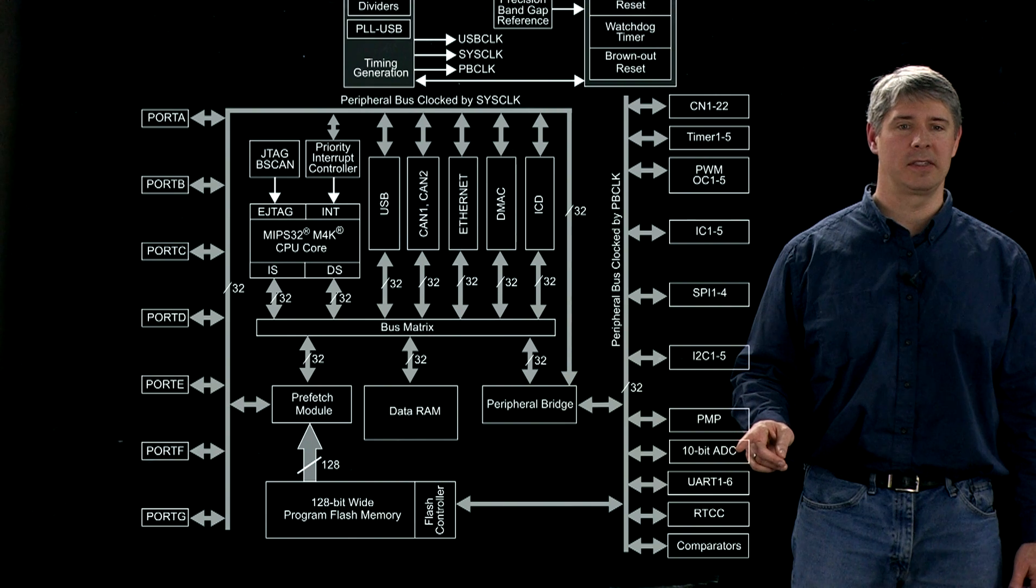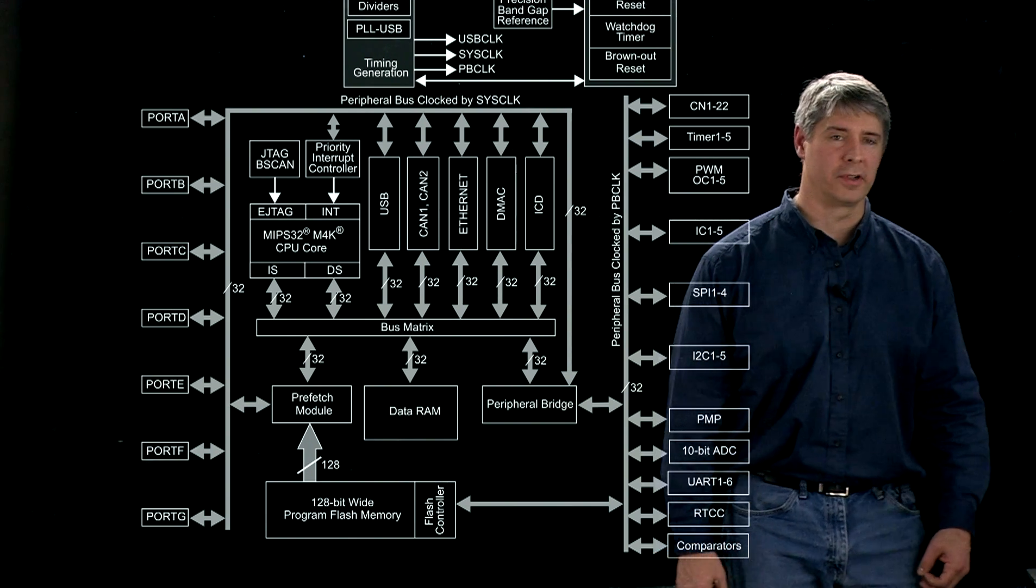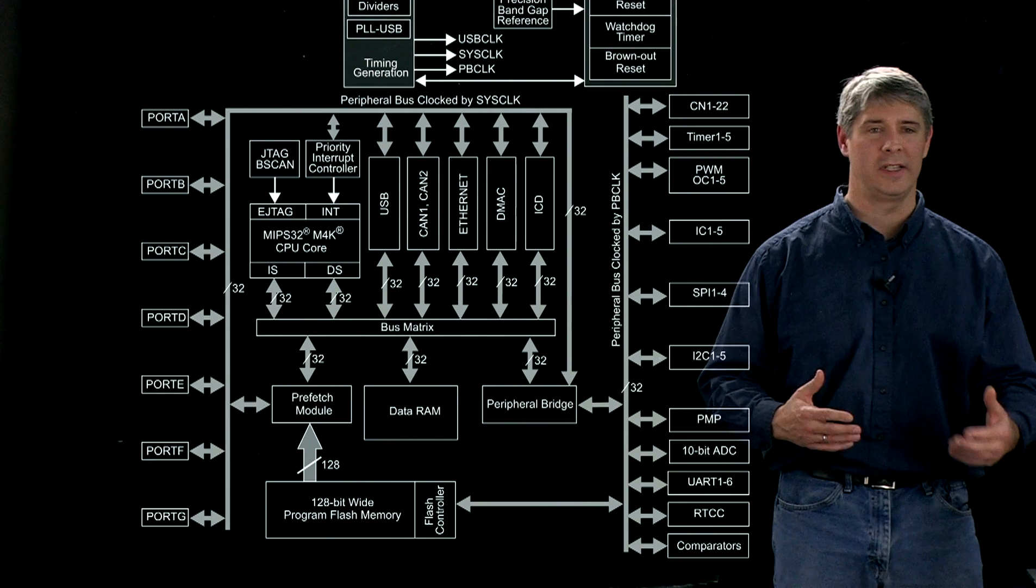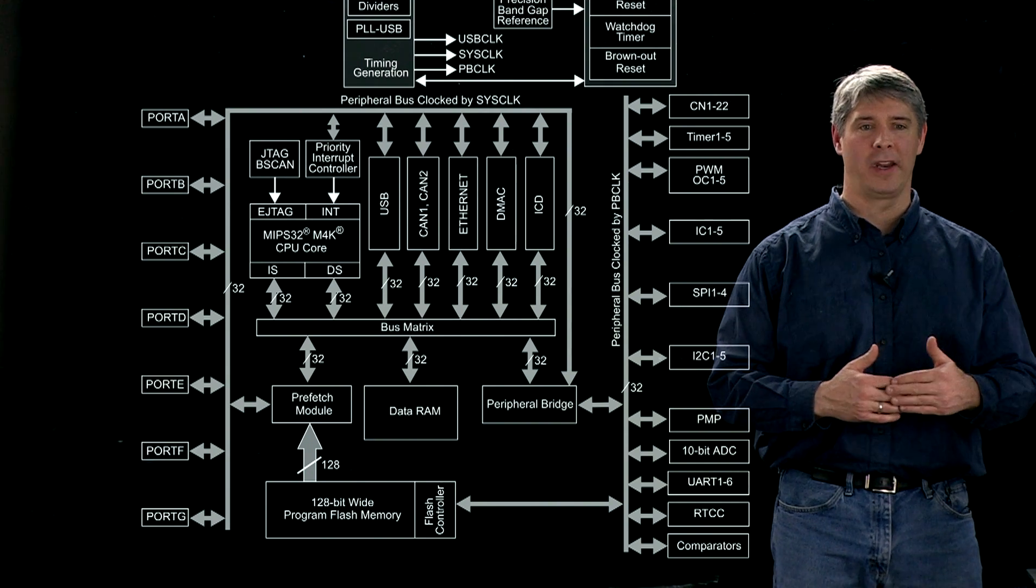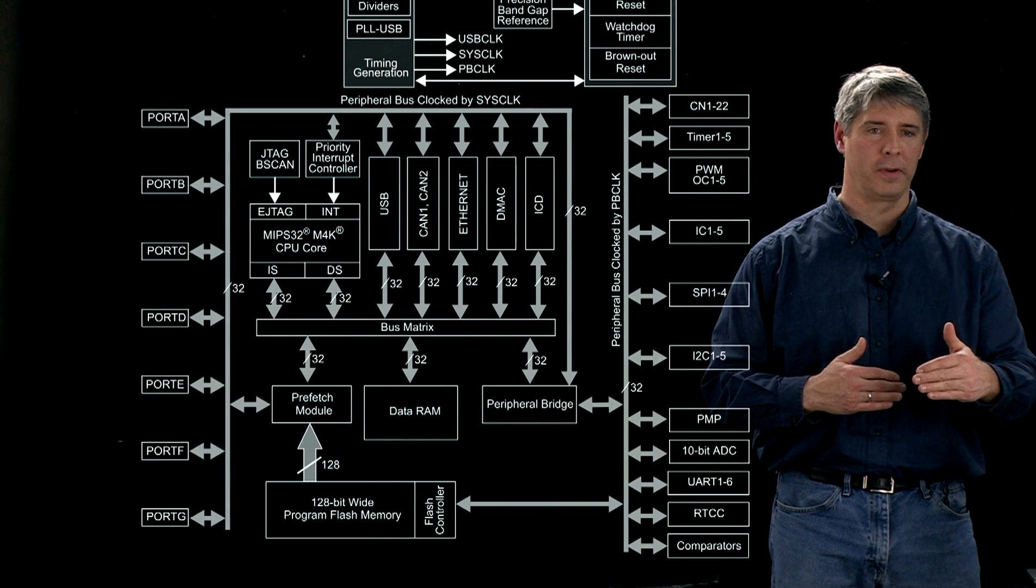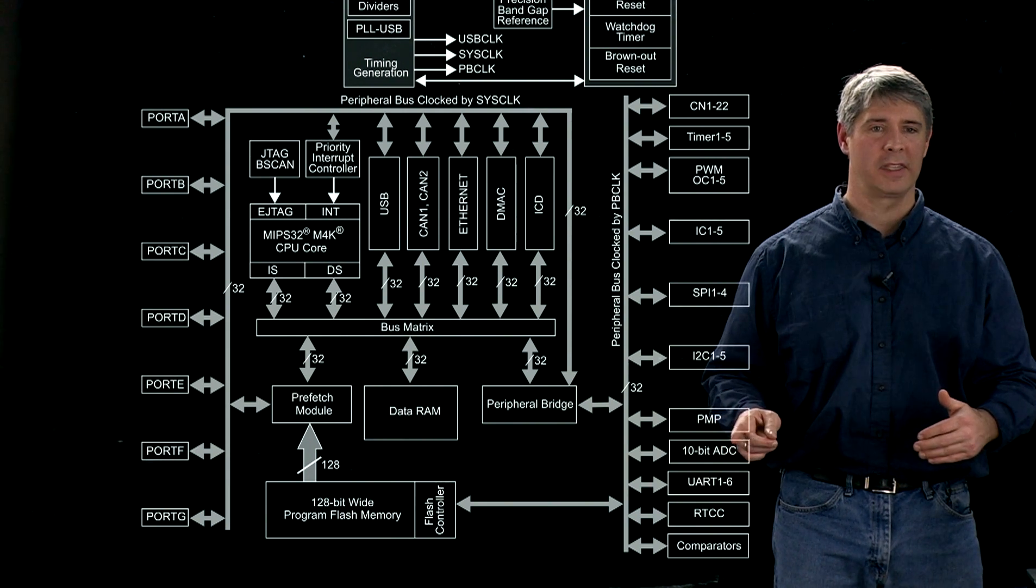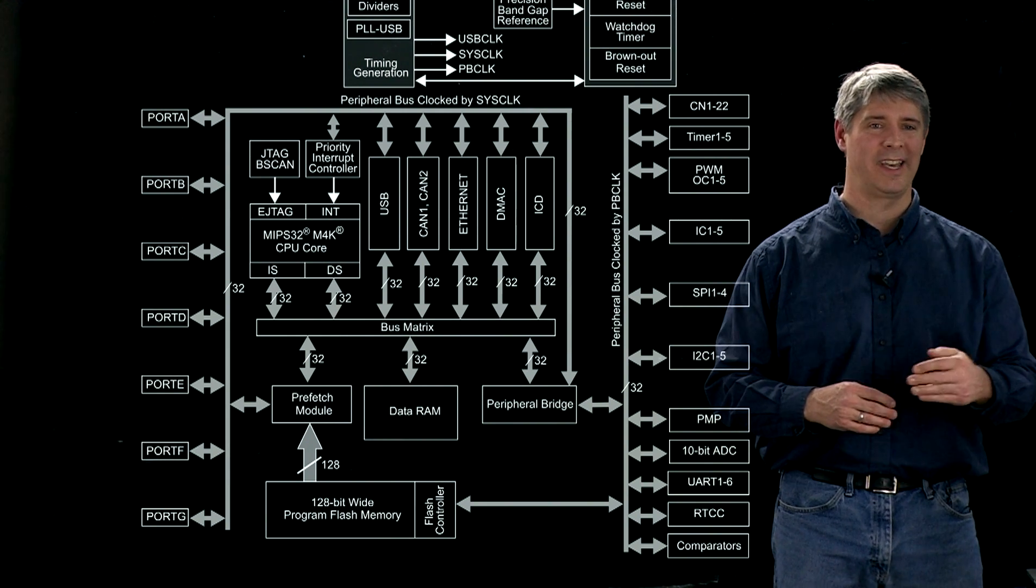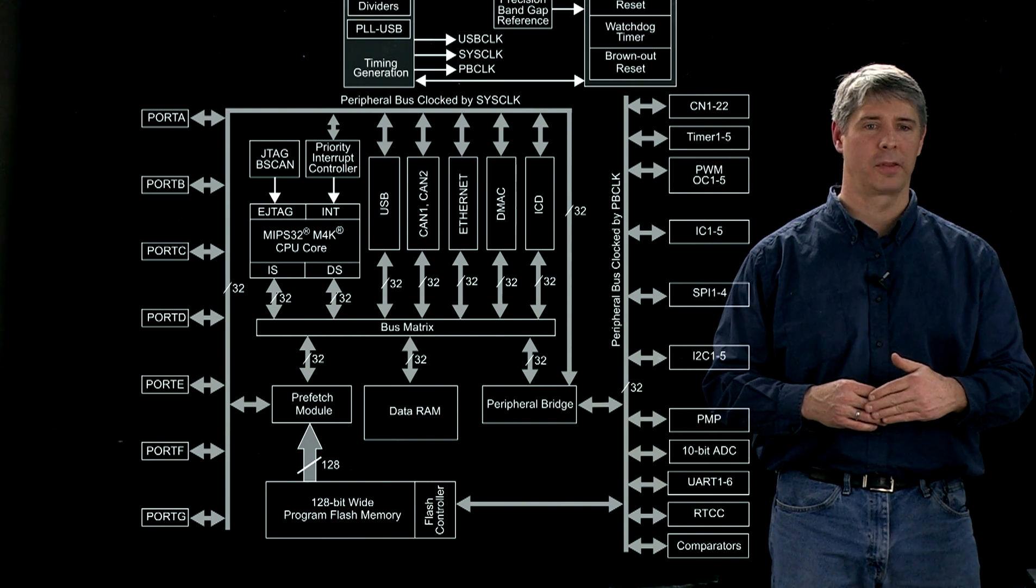We have these 10-bit analog to digital converters, so these are what we'll use to read sensors. They might be providing voltages back to the PIC in the range of 0 to 3.3 volts, and because it's 10 bits, we can distinguish 2 to the 10 different levels of voltage from 0 to 3.3.